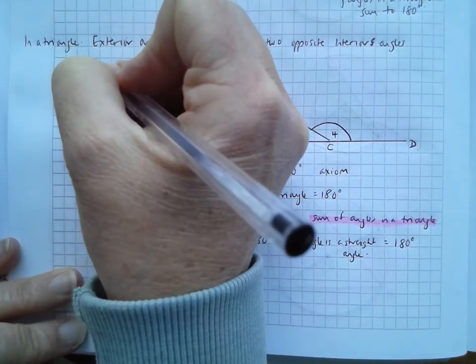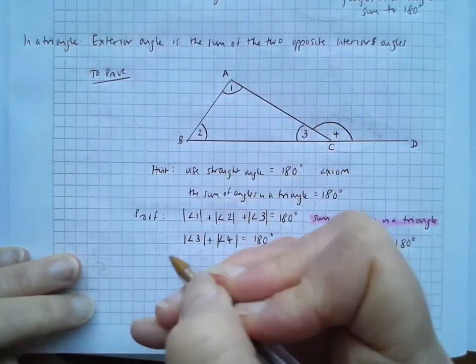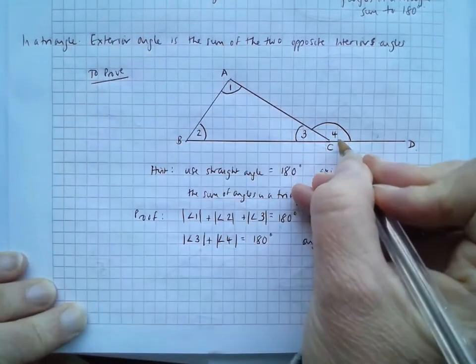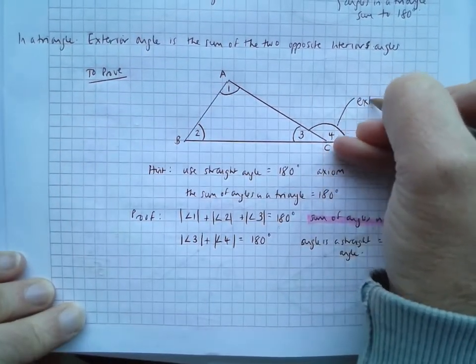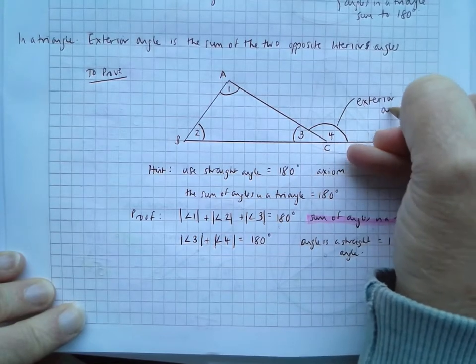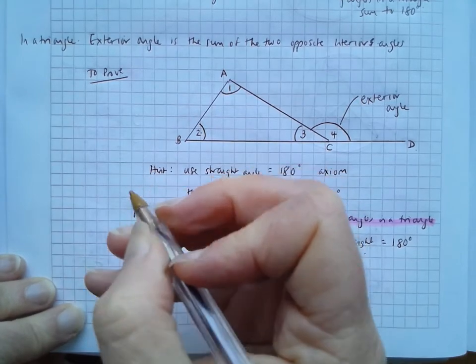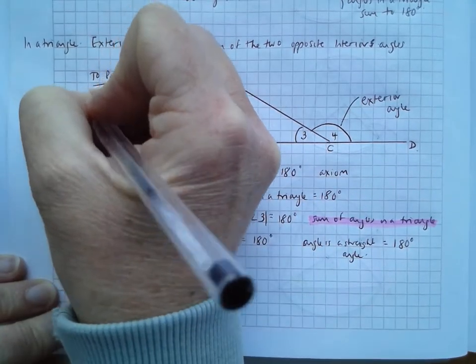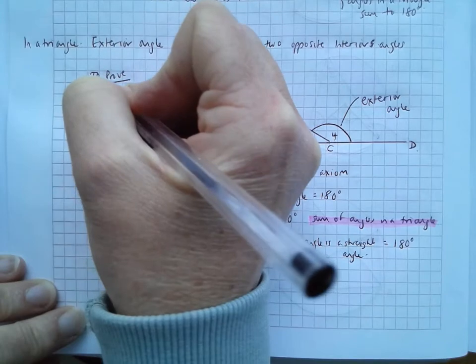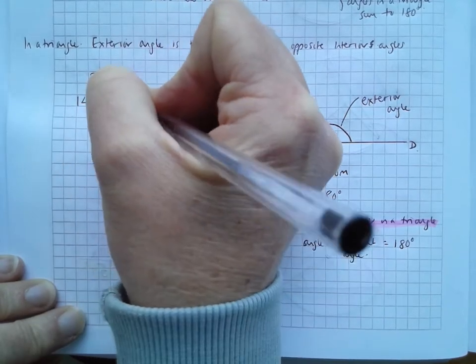What we want to prove is that this exterior angle is equal to this plus this interior angles. Okay. So we want to prove that the measure of angle four is equal to the measure of angle one plus the measure of angle two.